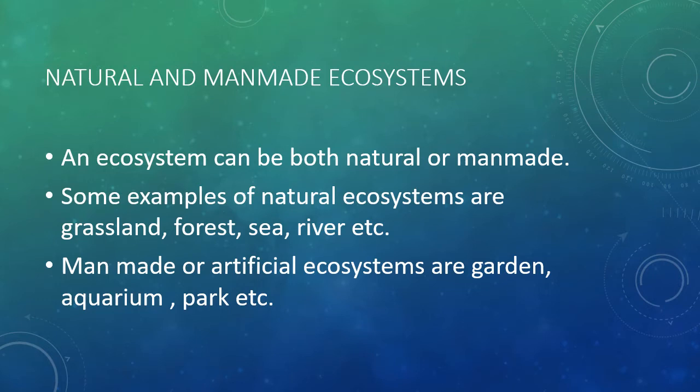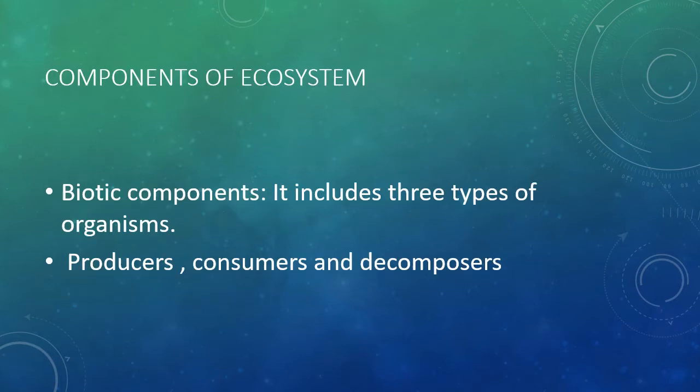Man-made or artificial ecosystems include garden, aquarium, park, etc. The biotic components of an ecosystem include three types of organisms: producers, consumers and decomposers.